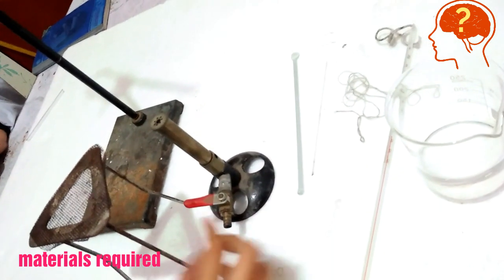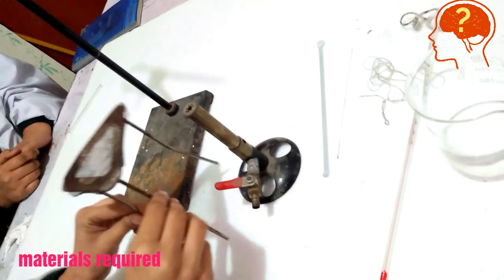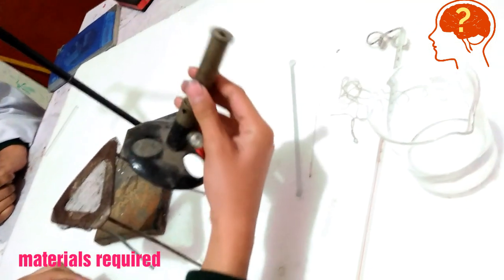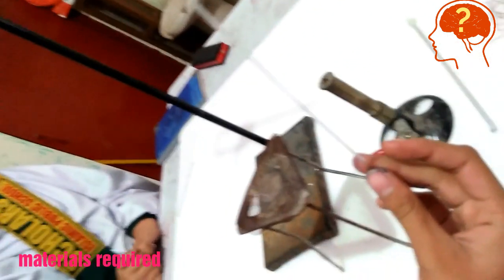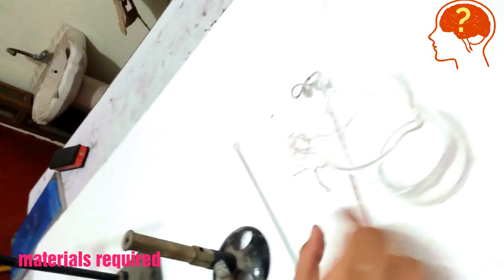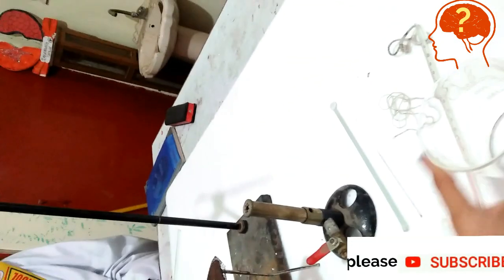you need fusion tube, tripod stand, bunsen burner, iron stand, capillary tube, beaker containing water and thermometer.